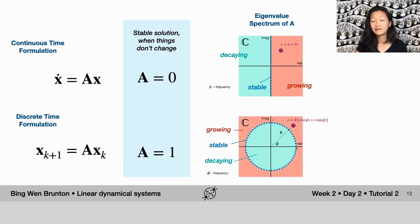Now these two eigenvalue spectra are actually related to each other by a logarithm operation, where you scale it by delta t, whatever the units of delta t are. In the continuous time formulation, b is proportional to the frequency.